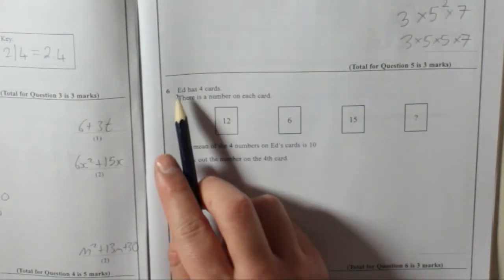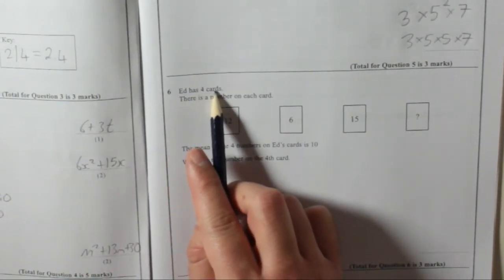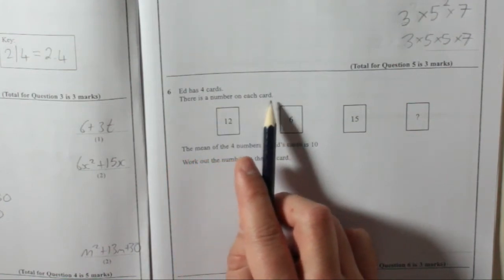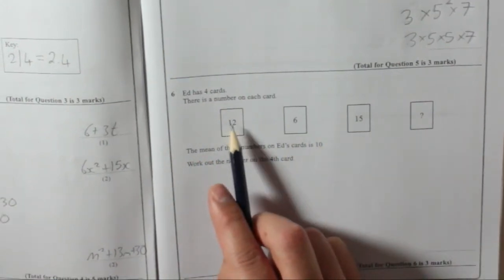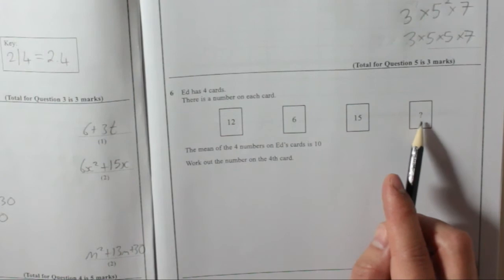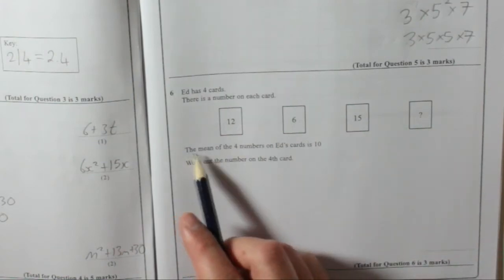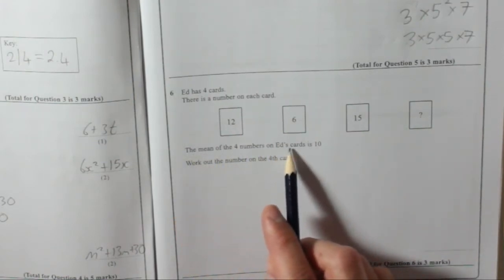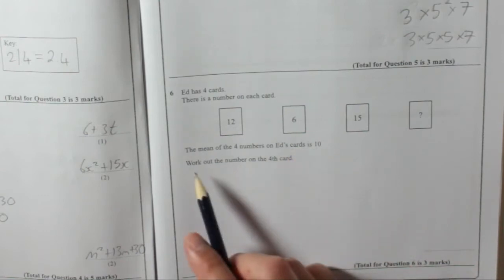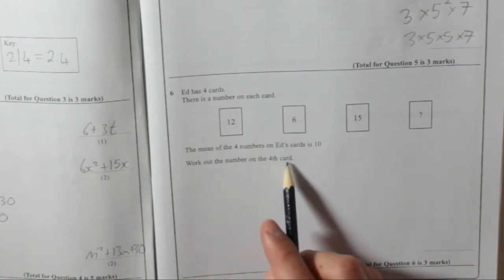Question six. Ed has four cards. There is a number on each card. Here are the cards: twelve, six, fifteen, but we're not told that one.